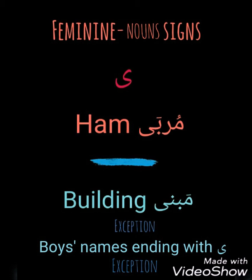The next sign is the shortened Alif. For example, Murabba. The exception, for example, we have Mabna, and also boys' names ending with the shortened Alif.